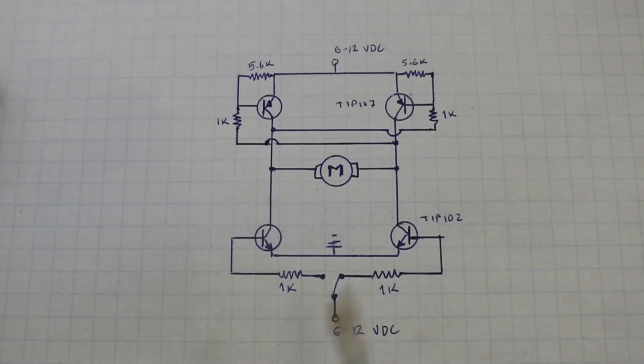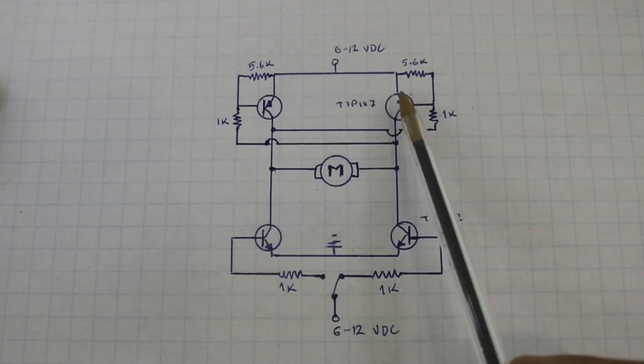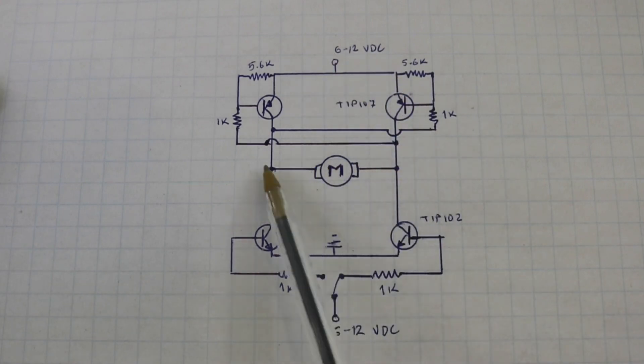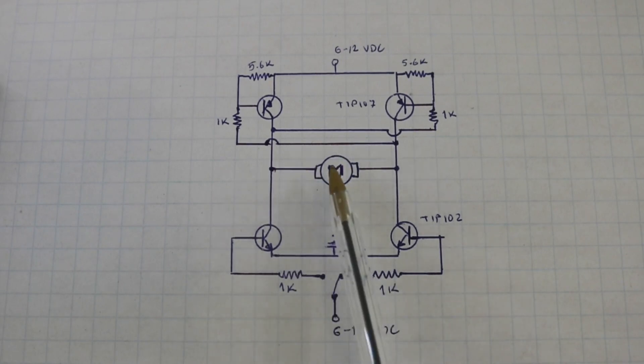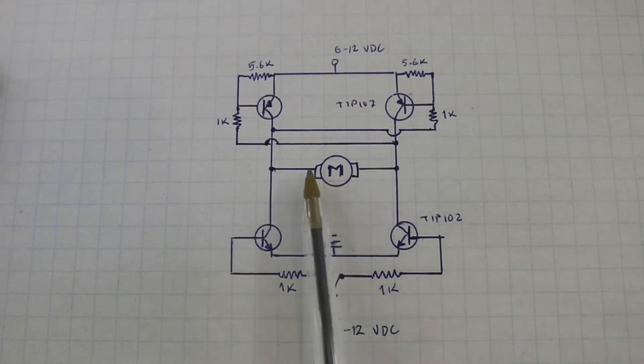Now if we move the switch to the other position something very similar happens but these two transistors will be on and now the current will flow from here through the motor in the reverse direction therefore the motor will rotate in the other direction and to ground. So in this way moving the switch we can reverse the direction of rotation of the motor.